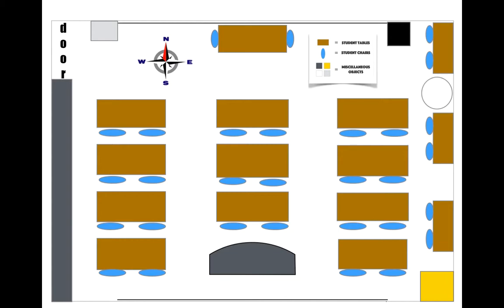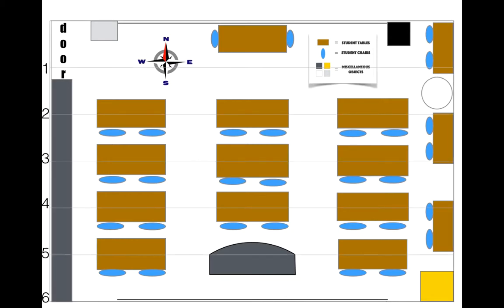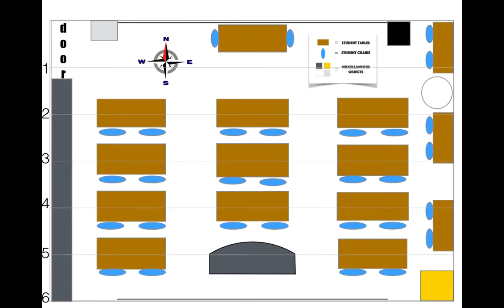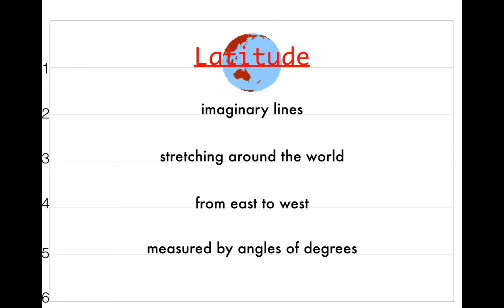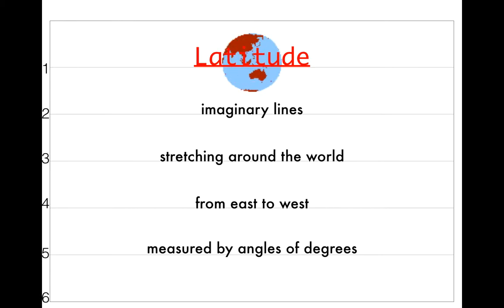Next, what we'll be taking a look at are lines of latitude. These are called parallels of latitude due to the fact that they run from east to west. If you look at the compass rose next to one of the lines, you'll notice that they're pointing in the same direction. Latitude can be defined as imaginary lines stretching around the world from east to west, measured by angles of degree. The most famous line of latitude is known as the equator, found at parallel zero degrees.